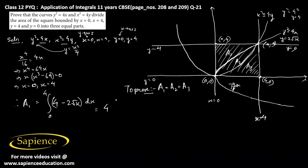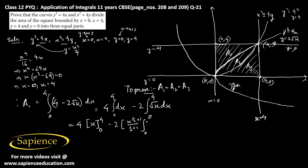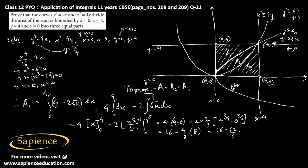So A1 equals 4 times the integral of dx from 0 to 4 minus 2 times the integral of root x dx from 0 to 4. This gives 4 times [x] from 0 to 4 minus 2 times (2/3) x to the power 3/2 from 0 to 4, which equals 16 minus (4/3) times 8, giving 16 minus 32/3, which equals 16 by 3 square units.